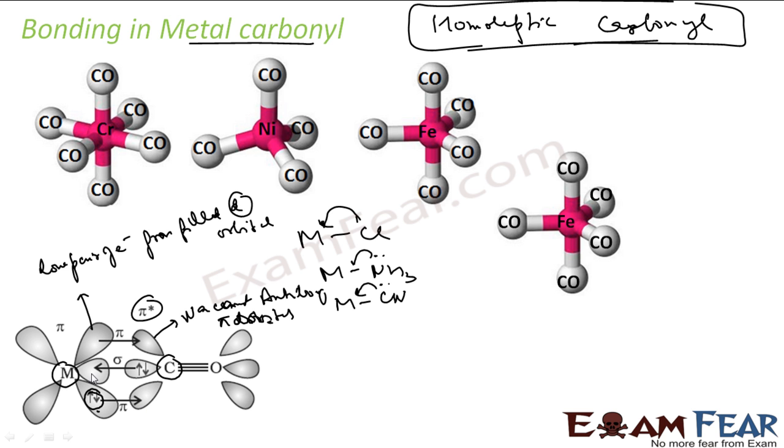Lone pair of electrons from carbon and vacant d orbital of the metal forms a sigma bond. Because the first bonds are sigma bond, the second bonds are pi bond. Hope you understand. See, in the case of sigma bond, the electrons are coming from the carbon. In case of the pi bond, the electrons are coming from metal. So in case of sigma bond, the vacant orbital of metal is used. In case of pi bond, the vacant orbital of carbon is used.